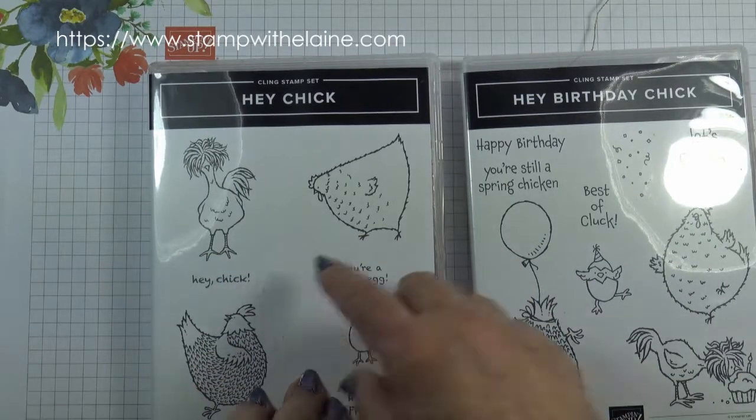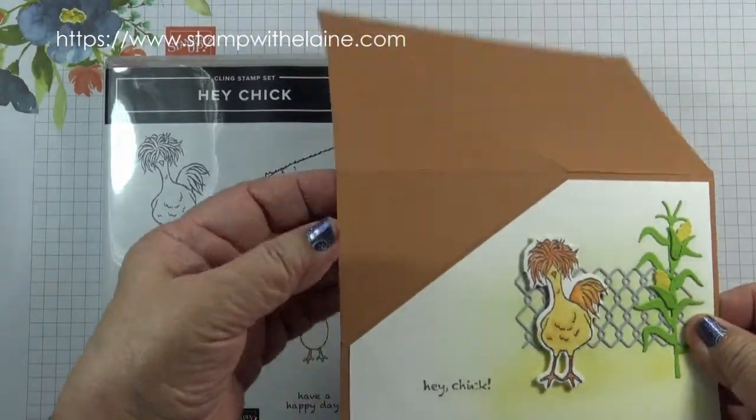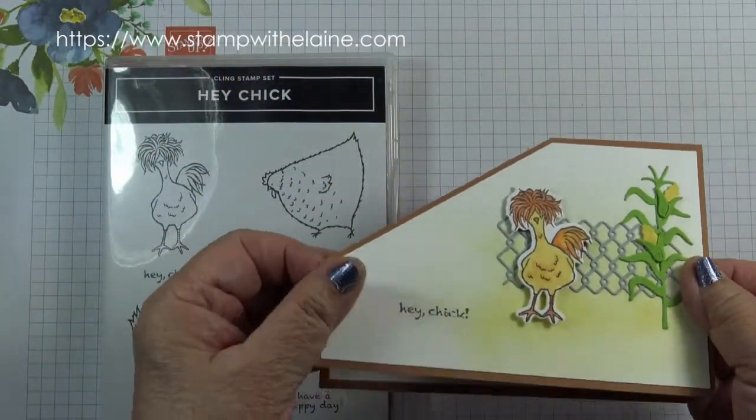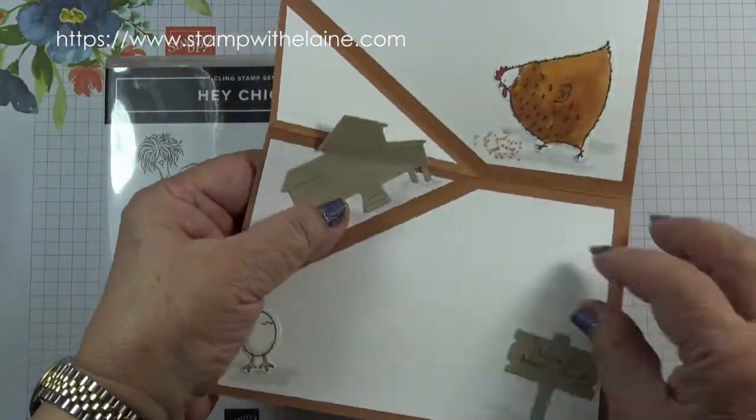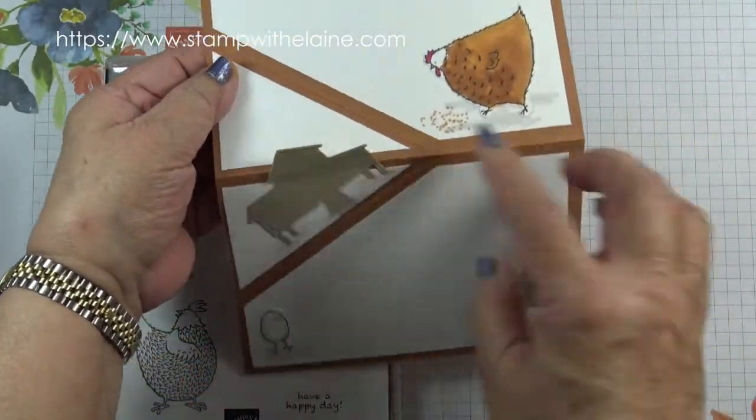So today I'm going to look at the Hey Chick one. This is the card we'll be making. It's an angled card and then when you open there's a little pop-up here with the chicken coop.